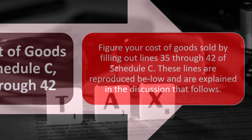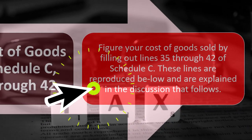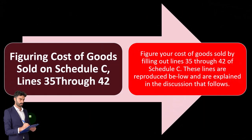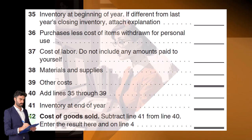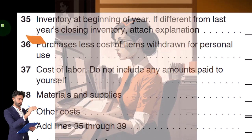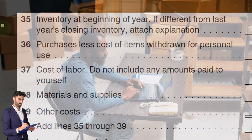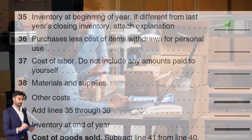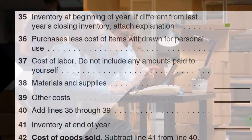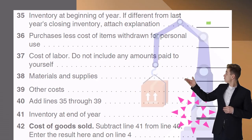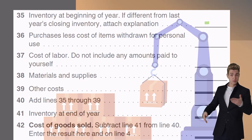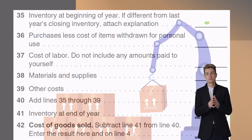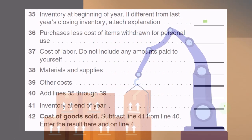To figure your cost of goods sold, fill out lines 35 through 42 of Schedule C. Line 35 is inventory at the beginning of the year — if different from last year's closing inventory, attach an explanation. This line should match last year's ending inventory, because the end of last year is the beginning of this year. Beginning balance rollovers are one area where people commonly have issues, so you may need to investigate any differences.